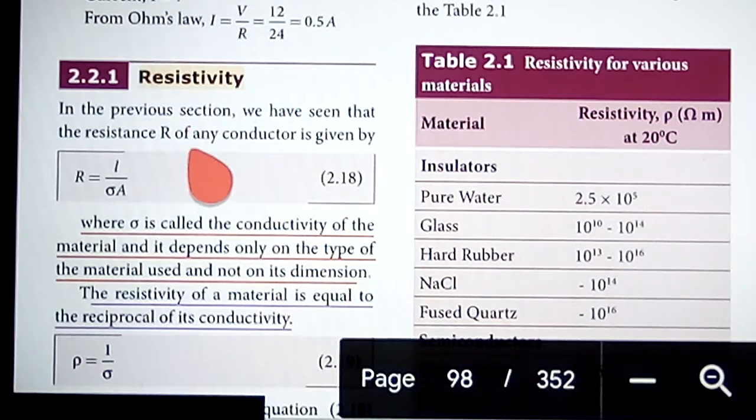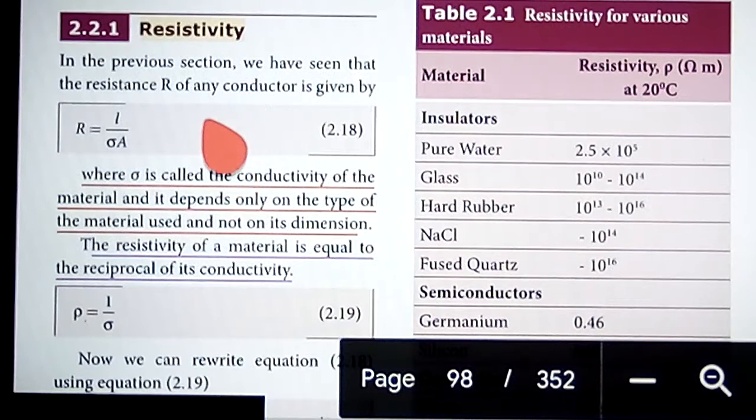In the previous section, we have seen that the resistance of any conductor is given by the expression R equals L by sigma A. Sigma is called the conductivity of the material and it depends only on the type of the material used and not on its dimension.